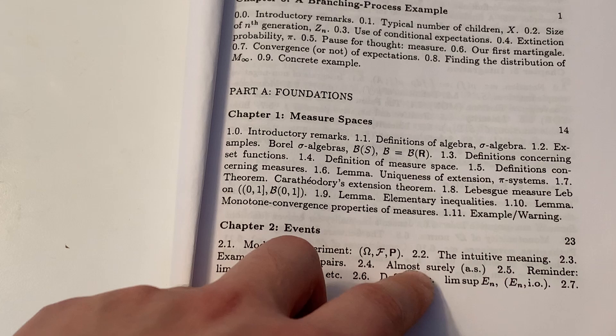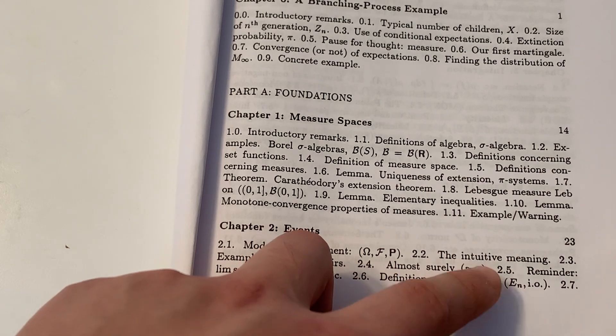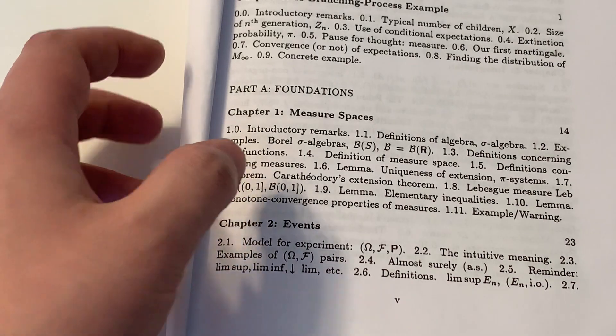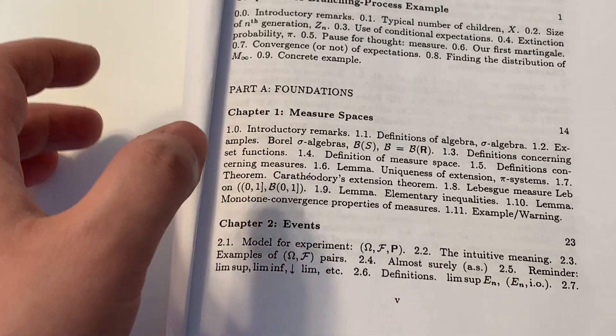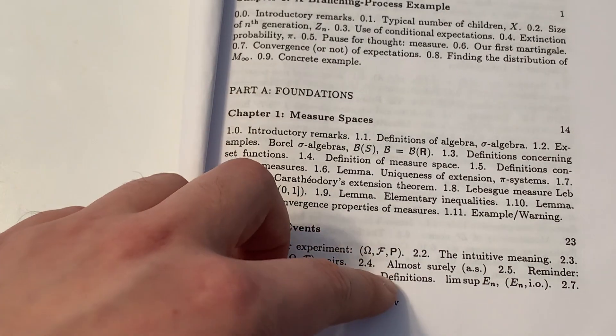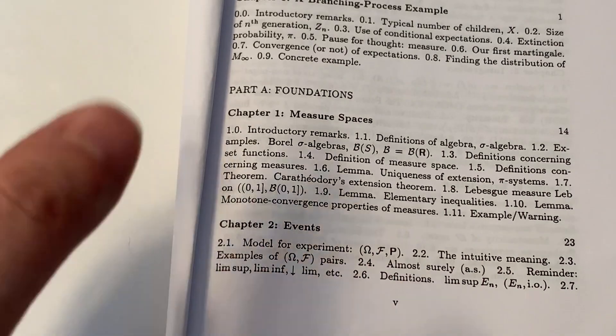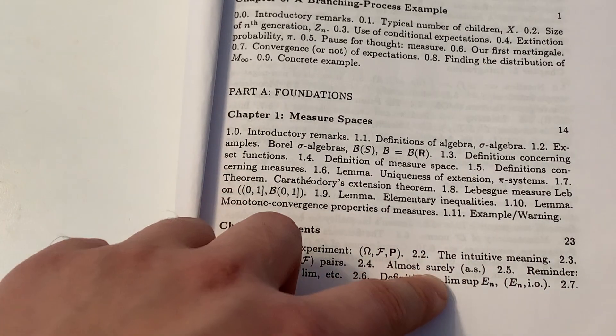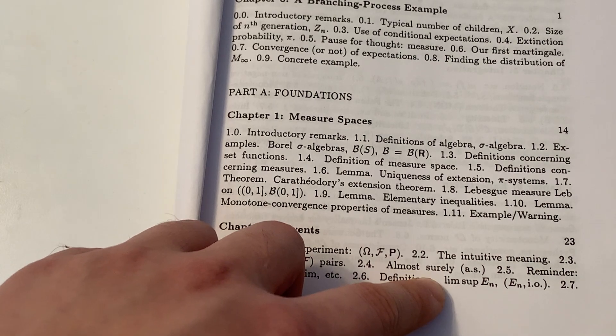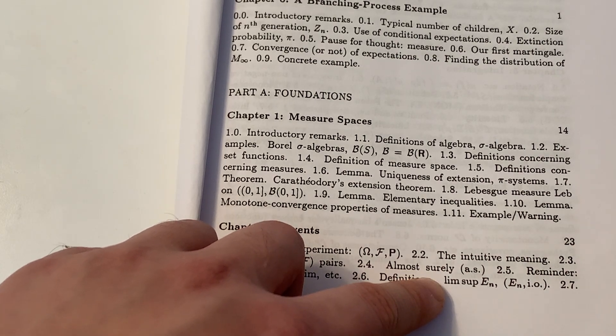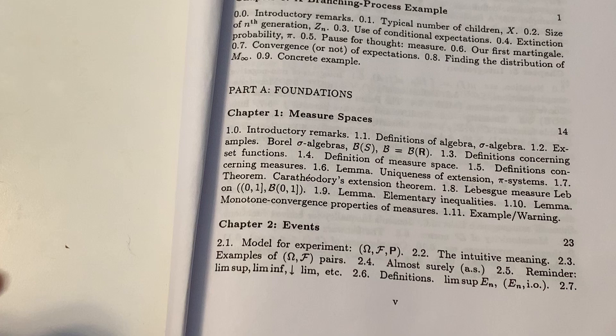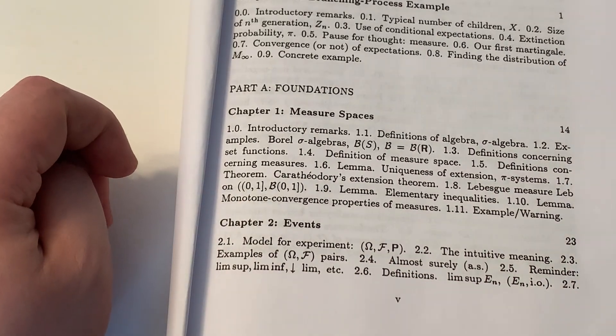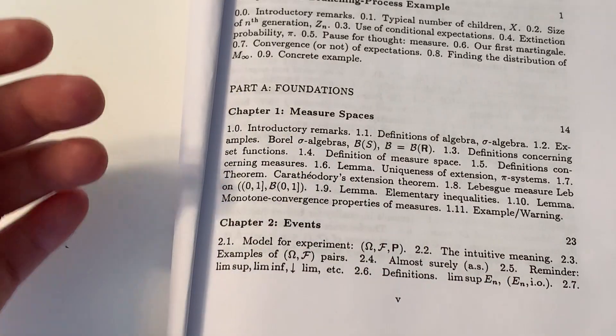2.4, almost surely. We'll see this acronym a lot, AS, in probability theory. Almost surely. We know mathematics is supposed to be very accurate, no ambiguity. So why do mathematicians talk about almost surely? Because the notion of almost surely has a technical meaning. If a property holds almost surely, that means the set where the property does not hold has a zero probability. That's the meaning of almost surely. In pure measure theory, the lingo is almost everywhere.